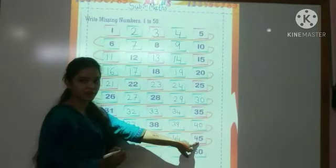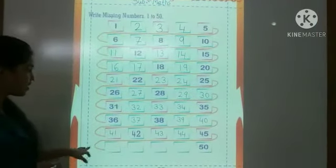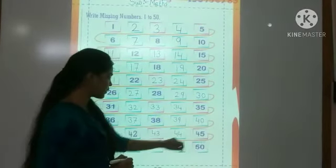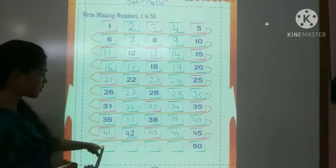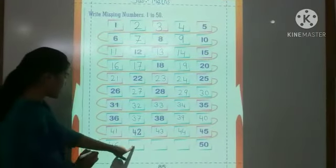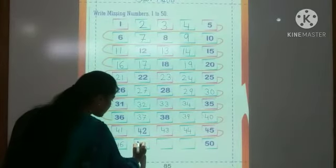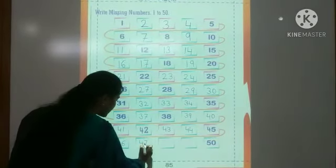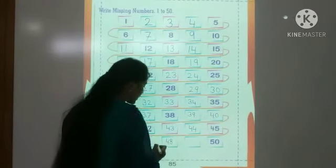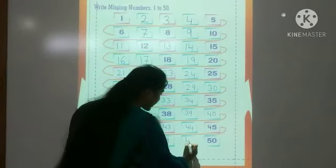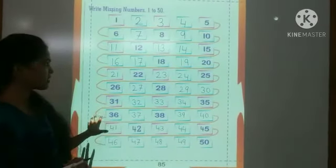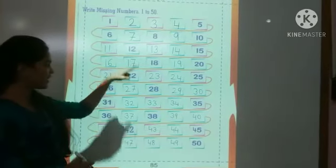Then 4 tens and 5 — 45 is there. See: 43, 44, 45. After which number comes after 4 tens and 4? 45. Yes, 4 tens and 6 — 46. Again 1 box is empty — which number is missing from here? 46 after, 4 tens and 7 — 47. Then 4 tens and 8 — 48. After 48, 4 tens and 9 — 49. Then 50 is mentioned here. Those numbers were missing — we found them and written those numbers.